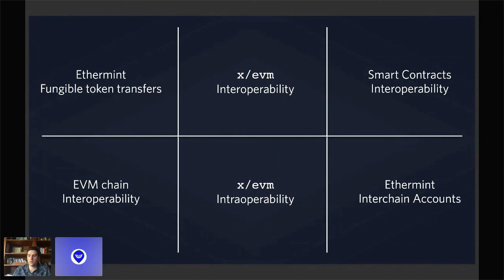Ethermint is still in alpha. Once we can stabilize the chain a bit more, we'll definitely be looking into how to do major refactors by stabilizing APIs with the Geth approach, since they have a lot of private functions that we had to copy over.